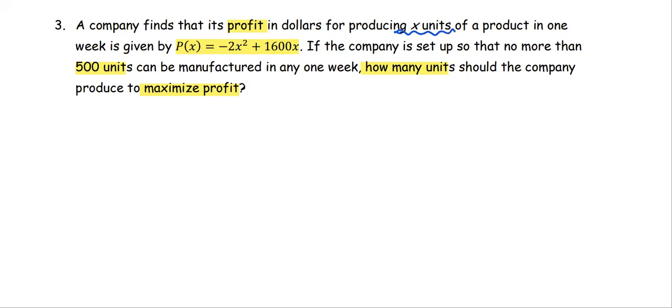Since x is the units produced, this means x is between 0 and 500, the closed interval [0, 500]. Maximize profit refers to finding the absolute maximum profit on the closed interval [0, 500].